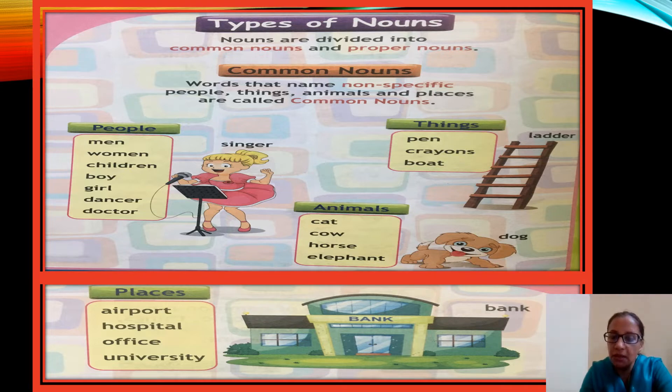More examples of common nouns under things: pen, crayons, boat, ladder, phone, pencil box, computer, laptop. All these are common nouns.